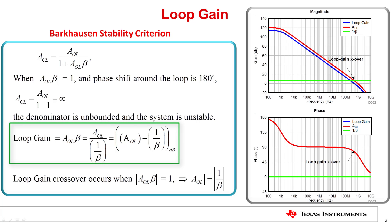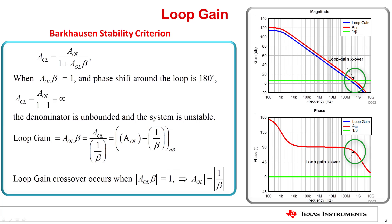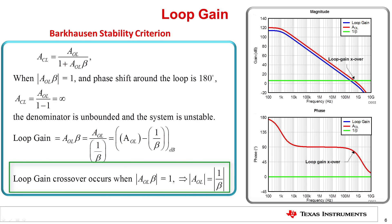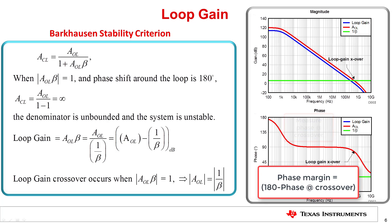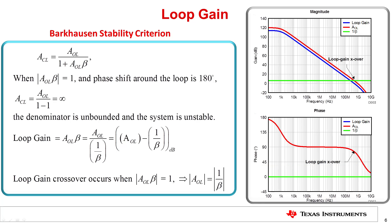The intersection between the AOL and noise gain curves is called the loop gain crossover point, and is the frequency at which the loop gain magnitude becomes 1. The phase is then measured at the loop gain crossover frequency. The phase margin is the difference between the measured phase and 180 degrees. For a Butterworth response, the phase margin should be 64 degrees. The closer the phase margin is to 0 degrees, the less stable the amplifier.